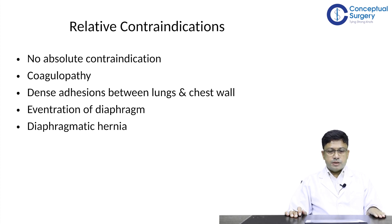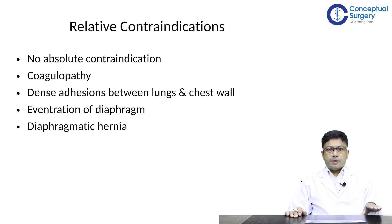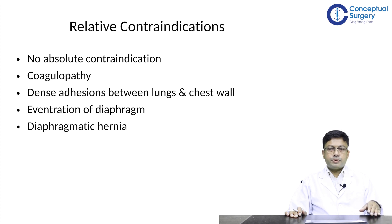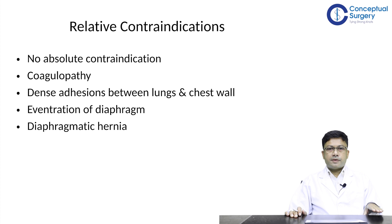If the patient has coagulopathy or is on anticoagulant medications, this requires special attention. A history of previous thoracic procedures like thoracotomy can lead to adhesions between the lung parenchyma and chest wall, requiring utmost care to avoid injuring the underlying lung. One should also be careful about eventration of the diaphragm or diaphragmatic hernia, where a chest tube could inadvertently be placed through the diaphragm into abdominal organs.